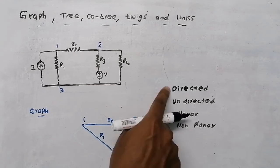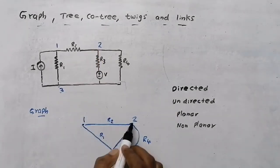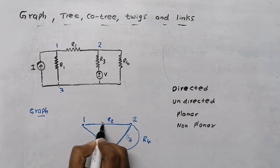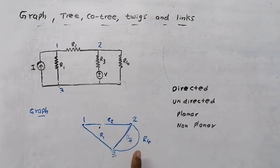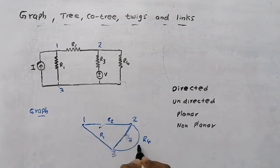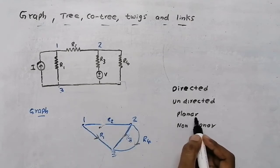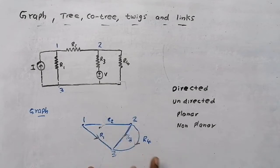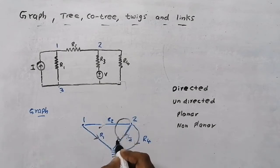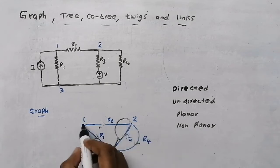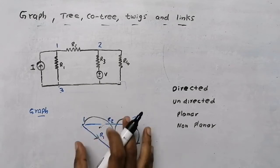There are four types of graph: directed, undirected, planar, and non-planar. Directed means there is a direction marked between nodes — that is a directed graph. If there are no directions, it is called an undirected graph. If there are no overlapping branches, it is called a planar graph. If there is an overlap — where branches cross — it is called a non-planar graph.